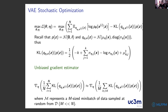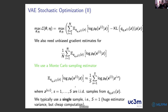For the KL divergence term in the ELBO, there is an analytical solution. For the other term — the expected log likelihood — we need an unbiased gradient estimate, which we can obtain using Monte Carlo sampling. We can then perform gradient ascent on this stochastic estimate to optimize the VAE parameters.